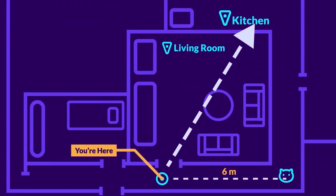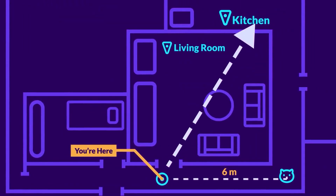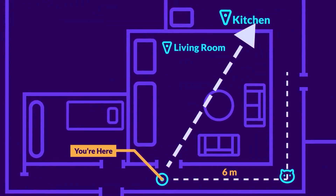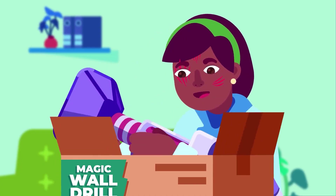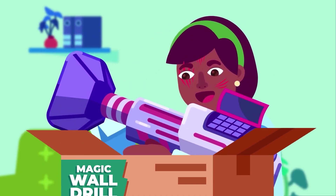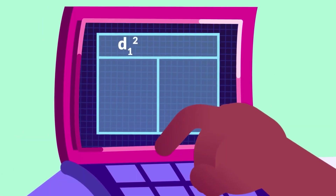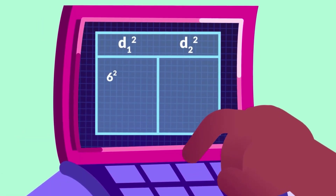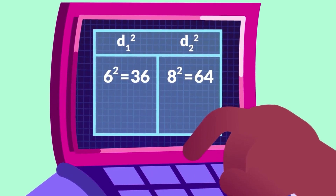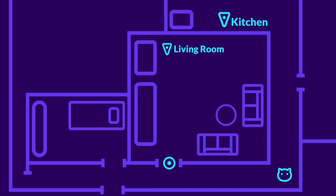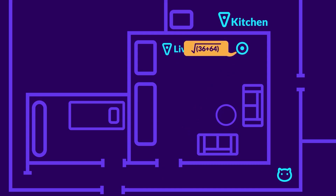Back to the shortcut. You know that the hallway is 6 meters long, while the distance from the turn to the kitchen is 8 meters. Can you tell what the square of 6 and 8 is? The squares of 6 and 8 consecutively are 36 and 64. Thus, the shortcut distance to the kitchen is equal to the square root of the sum of 36 and 64.